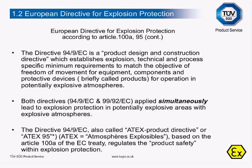Directive 94/9/EC is a product design and construction directive which establishes explosion, technical and process-specific minimum requirements to match the objective of freedom of movement for equipment, components and protective systems — briefly called products — for operation in potentially explosive atmospheres. Both Directives, 94/9/EC (the product) and 99/92/EC (the user), applied simultaneously lead to explosion protection in potentially explosive areas with explosive atmospheres, meaning that the two directives, although separate, will need to be interlinked together. Directive 94/9/EC is also called ATEX Product Directive or ATEX 95, based on Article 100A of the EC Treaty, and regulates product safety within explosion protection.